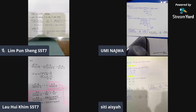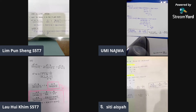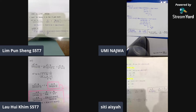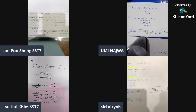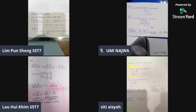Hello, everyone. We are from S5T7. Today, we are going to discuss about our mathematics assignment. I'm Lau Hui Kim, and these are my group members: Lim Punsheng, Umi Najwa, and Siti Aisha. Okay, so let's start our discussion now.